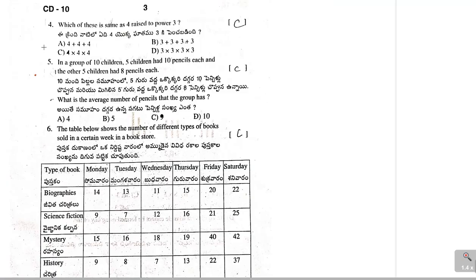Next, fourth problem. Which of these is same as 4 raised to power 3? So, 4 raised to power 3 means 4 cube. That will be equal to 4 into 4 into 4. So, option C is correct.